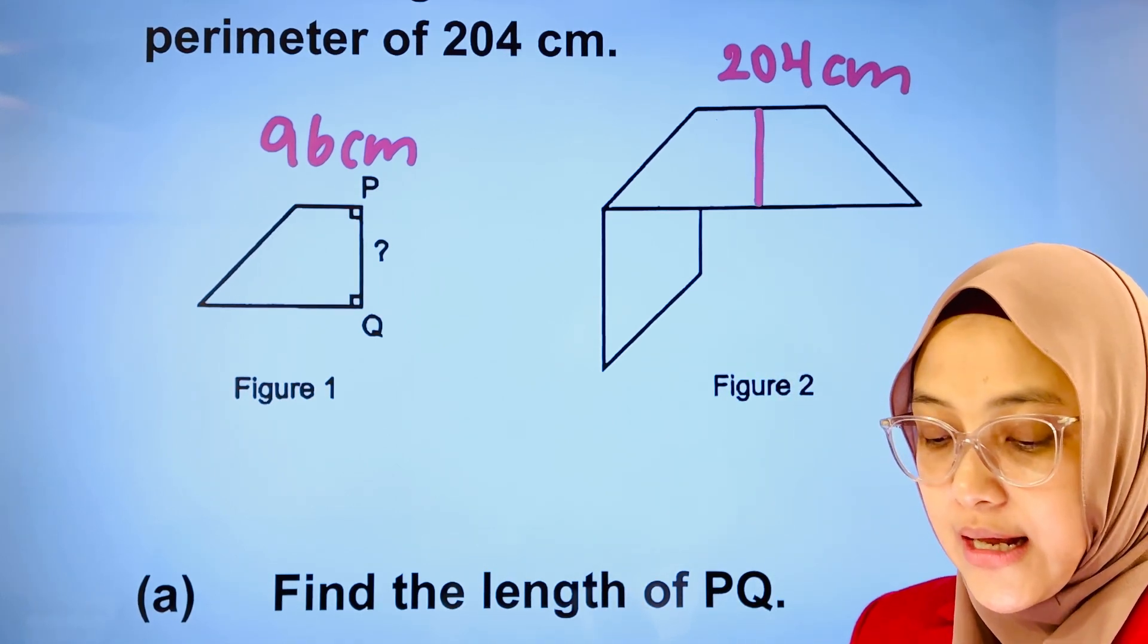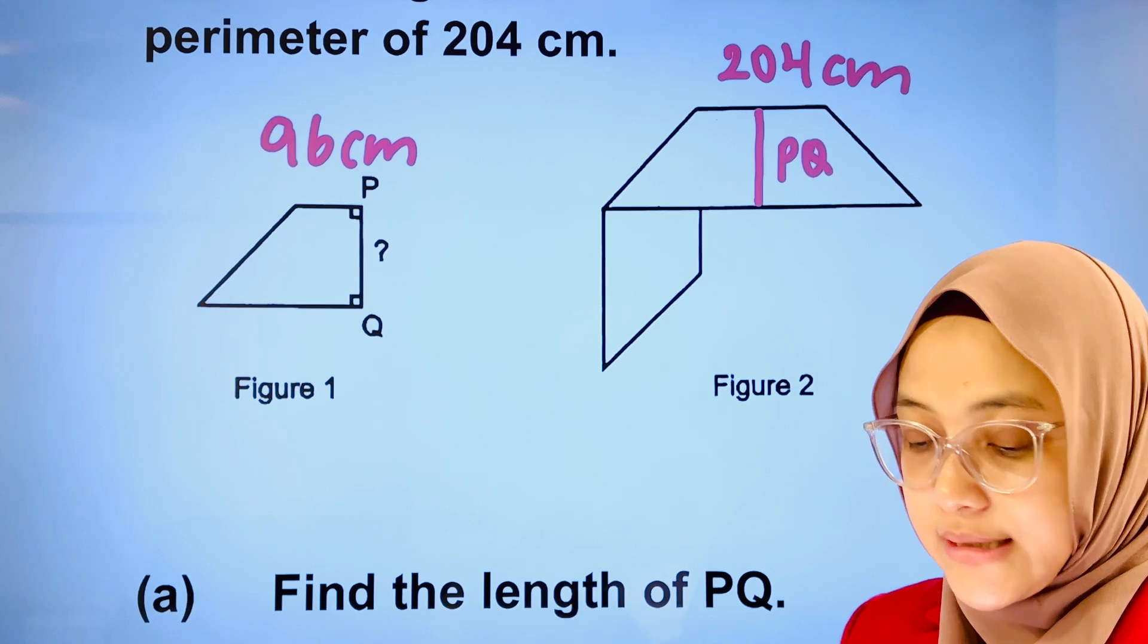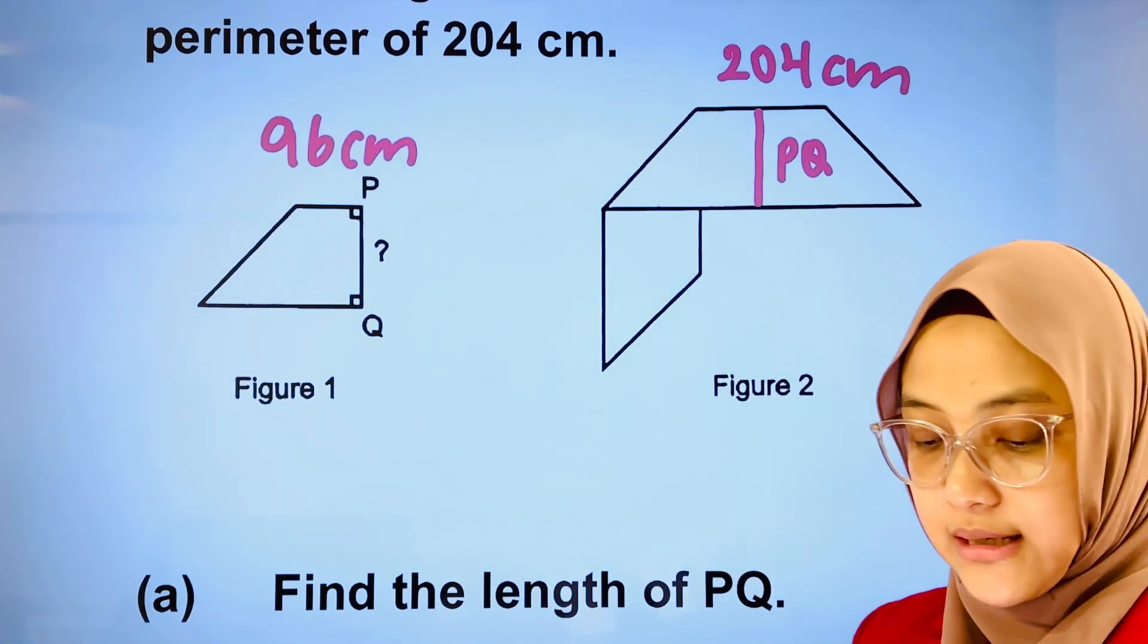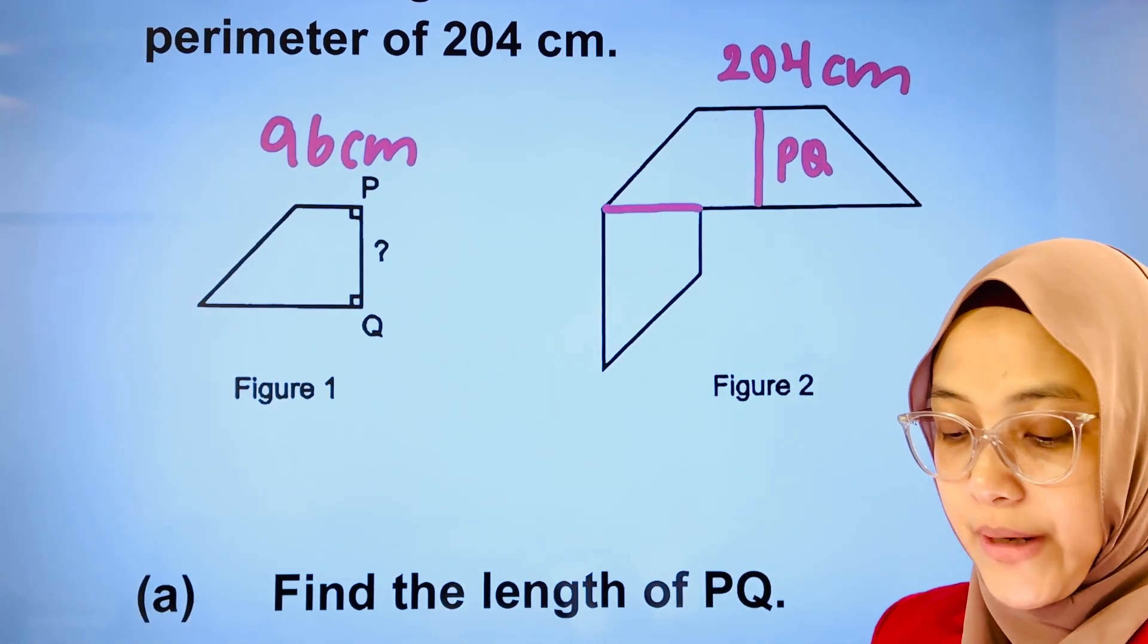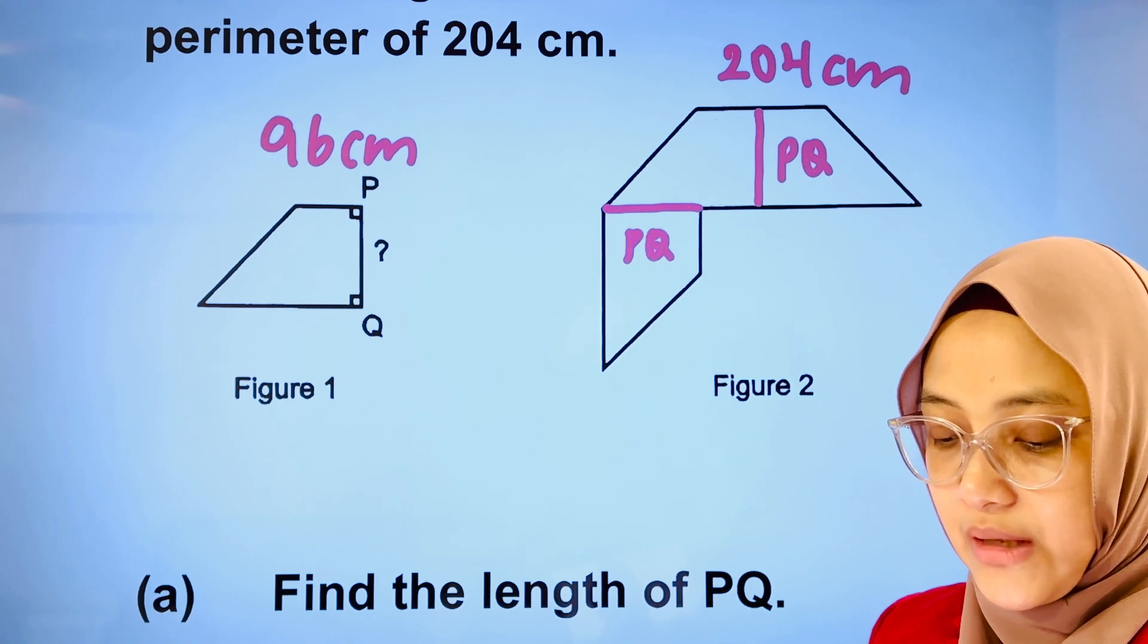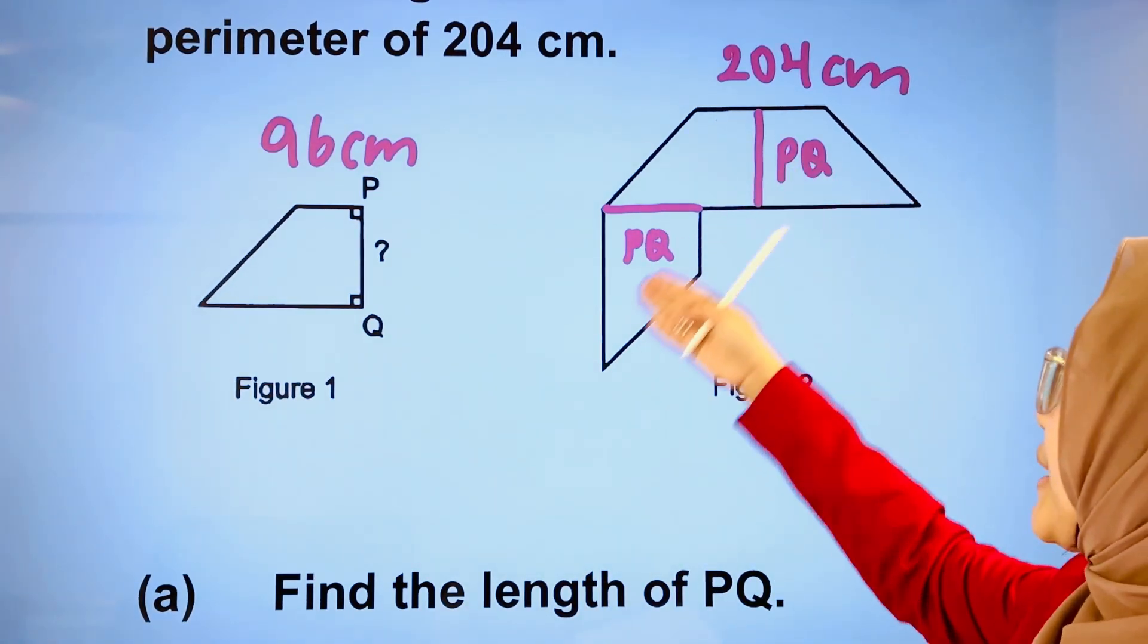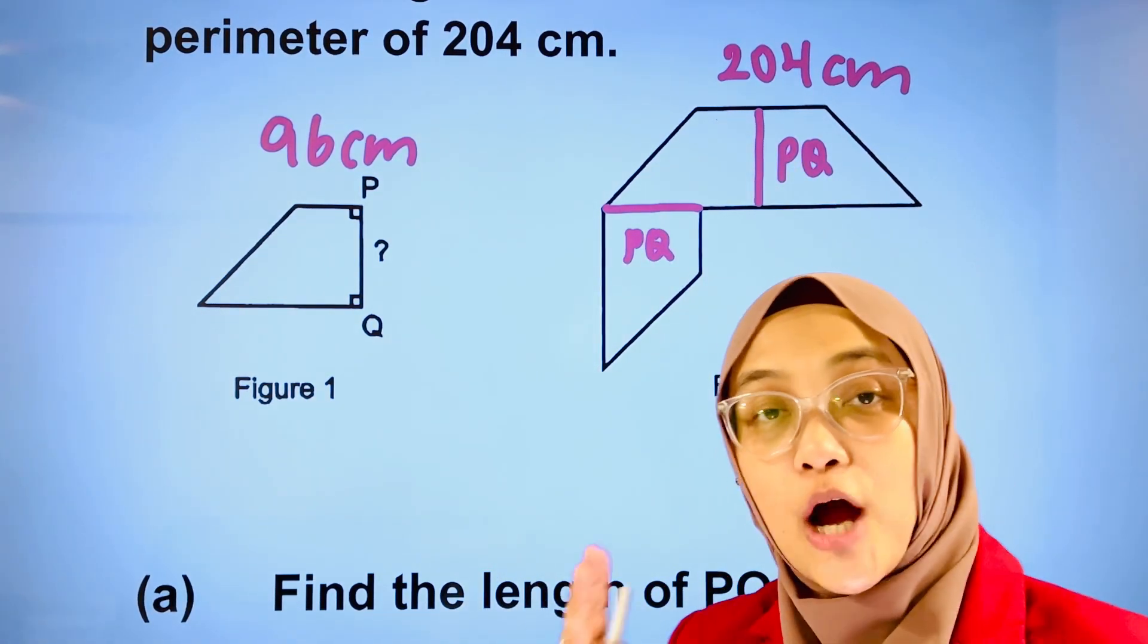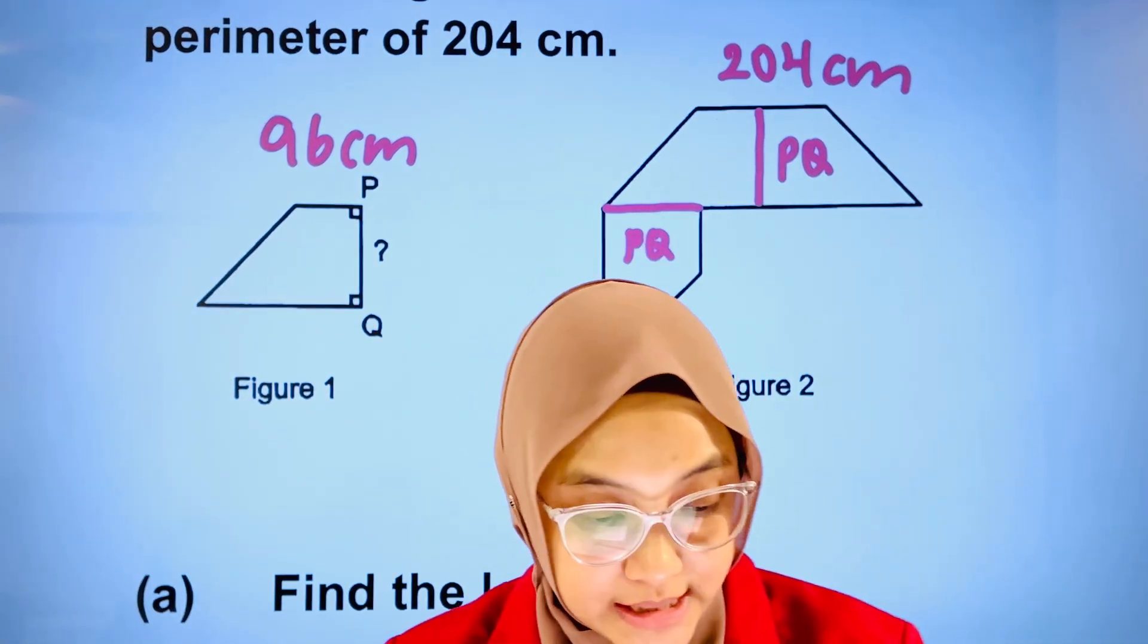This is not part of the perimeter. This is also not part of the perimeter. And those two lengths are PQ. And how many of those PQs are not part of the perimeter?